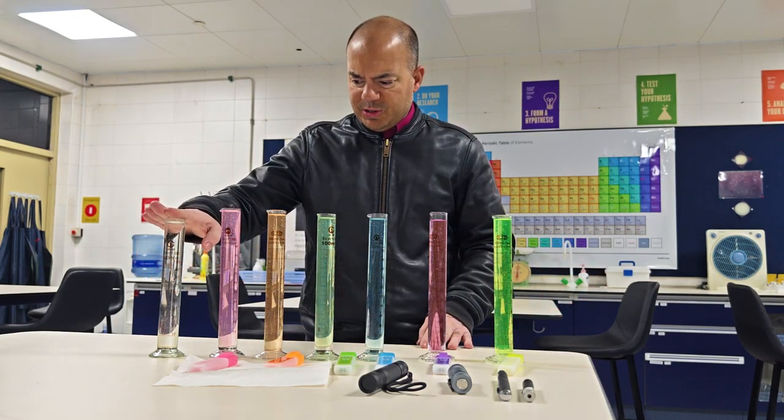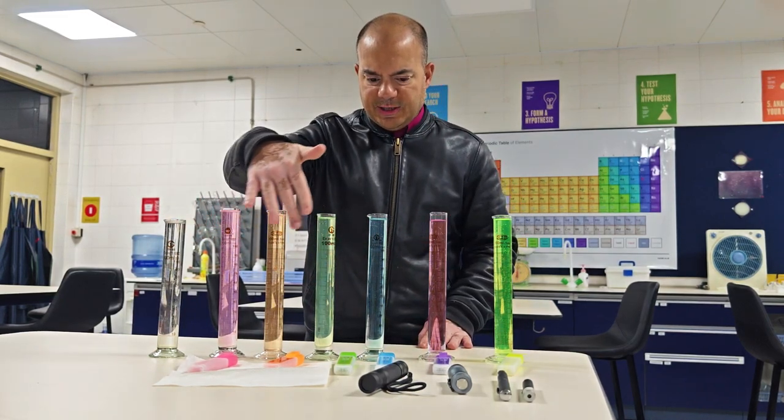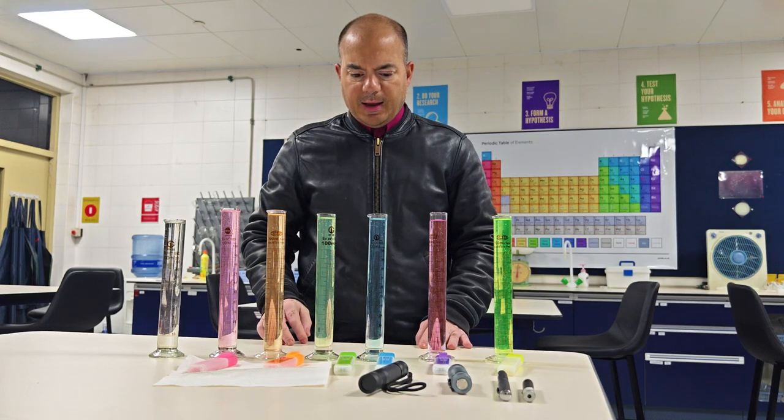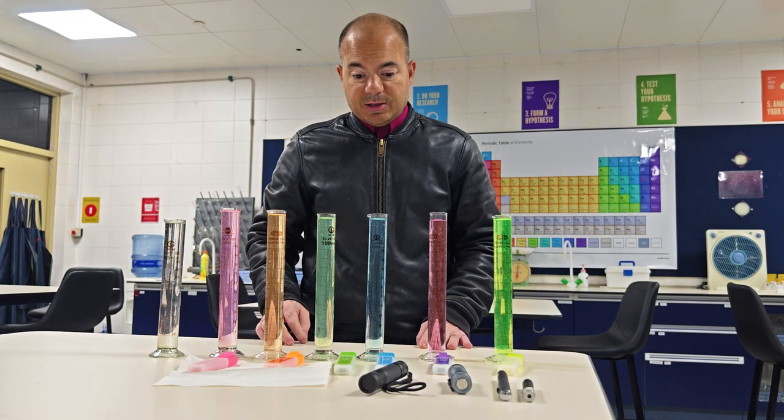So what I've got is plain water and I've got six different colors of highlighter ink. You can see the highlighters in front and what I'm going to do is shine different colors of light on them.